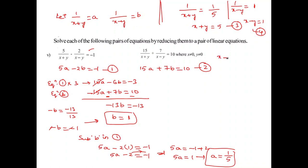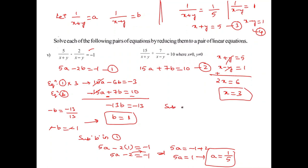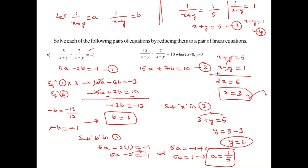Substituting A equals 1 by 5 gives x plus y equals 5 (equation 3). Now solving equations 3 and 4: adding them, 2x equals 6, so x equals 3. Substituting x equals 3 into equation 3: 3 plus y equals 5, so y equals 2. The required answer is x equals 3 and y equals 2.